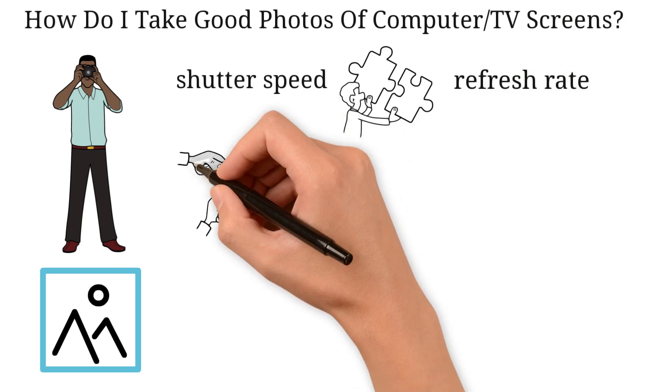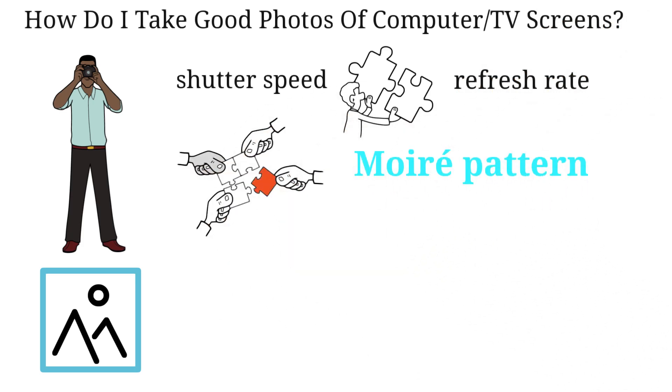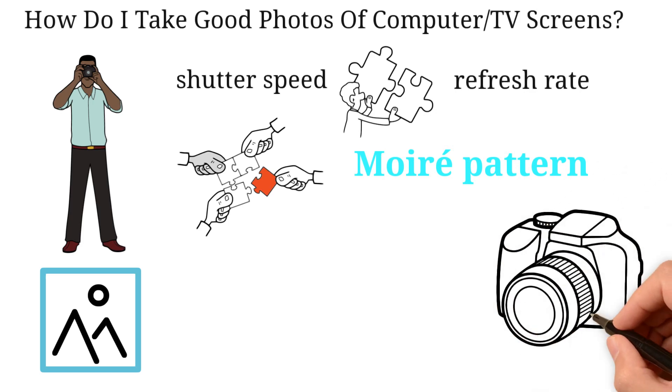If they don't match, you will see dark spots and the moiré pattern will happen. To be able to do this, you need a camera that lets you adjust the shutter speed of your camera.